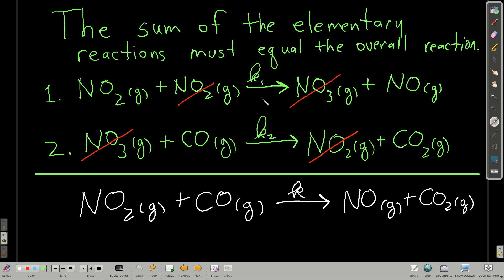The first requirement is that when we add up the elementary reactions, they must equal the overall reaction. When adding up the two steps, it's just like algebra — if something appears on one side of the arrow and then the other, it cancels. Nitrogen trioxide cancels, one of the nitrogen dioxides cancels, and we get the overall reaction. The species that cancel out when we add up the elementary steps are called intermediates.